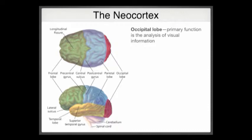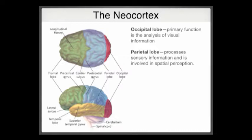The occipital lobe, at the back of the brain, is involved in processing vision and the analysis of visual information. The parietal lobe, just one step forward, is mostly involved in spatial cognition and spatial perception — things like navigating an environment, driving, and drawing. The parietal cortex is also critically involved in directing attention. Damage to certain parietal regions causes individuals to neglect parts of their environment — a fascinating attentional syndrome.